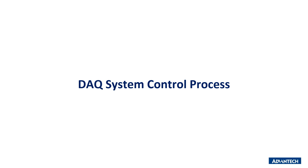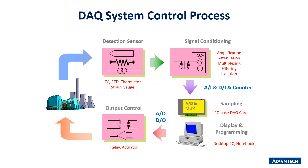We will explain what the DAQ system control process is. Using factory machine monitoring as an example — if we want to monitor the machine status, the first step is to decide which information you want to get, like machine vibration signal or machine temperature. With this information, we can choose the right detection sensor to get the signal you need.